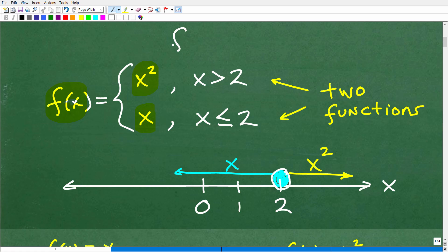We can think of this function as: we have f of x is equal to x squared. Now, when is it equal to x squared? Well, it's equal to x squared when x is greater than 2. I'll show you an example of how to think about this in a second. And then we have this other function, f of x, same function f, and it's equal to x when x is less than or equal to 2.